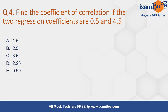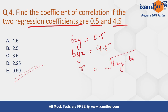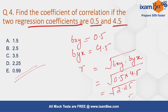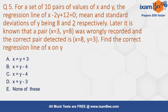Question number four: find the correlation coefficient if regression coefficients are 0.5 and 4.5. We have already solved this type of question. Here, let's say bxy is 0.5 and byx is 4.5. The value for the correlation coefficient r is the square root of bxy multiplied by byx, so it is the square root of 0.5 into 4.5, which equals 1.5. So the right answer for this question is 1.5, option A.